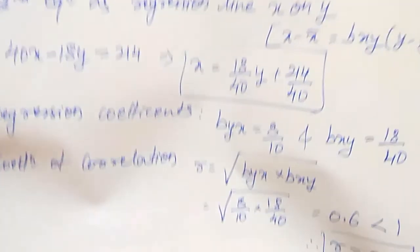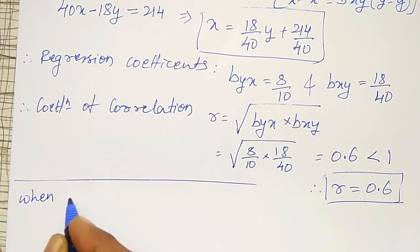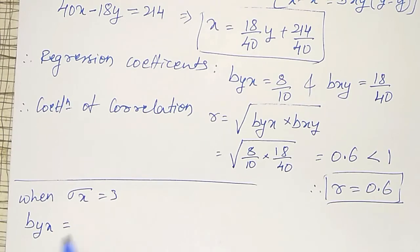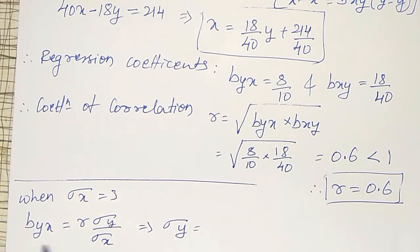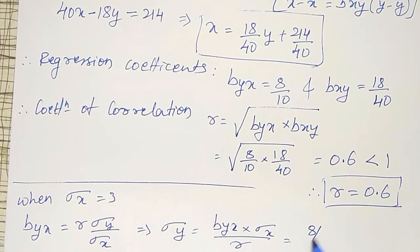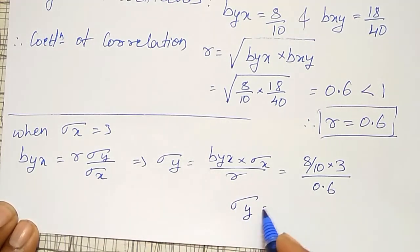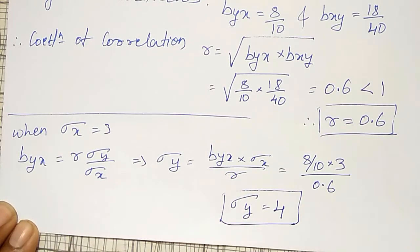Then, using this, I have to find Sigma Y when Sigma X = 3. We have BYX = R·(Sigma Y / Sigma X). So Sigma Y = (BYX × Sigma X) / R. Substituting BYX = 8/10, Sigma X = 3, and R = 0.6 and simplifying, Sigma Y = 4.